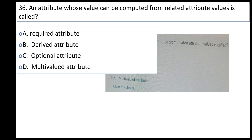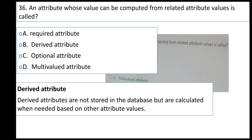The correct answer is B. Derived attributes are not stored in the database but are calculated when needed, based on the values of other attributes.